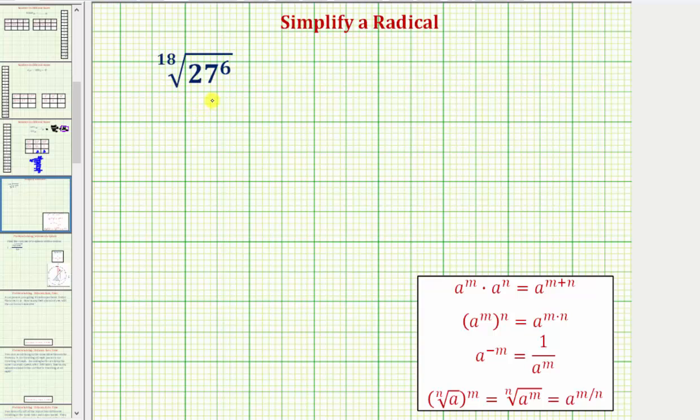We want to simplify the 18th root of 27 raised to the power of 6. There's several ways to do this. Let's begin by looking at our notes below.